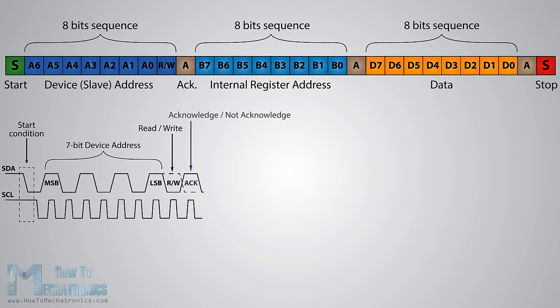The next bit, acknowledge, is used by the slave device to indicate whether it has successfully received the previous sequence of bits. At this time the master device hands control of the SDA line over to the slave device, and if the slave has successfully received the previous sequence it will pull the SDA line down to the condition called acknowledge. If the slave does not pull the SDA line down, the condition is called not acknowledged, meaning it didn't successfully receive the previous sequence, which can be caused by several reasons — for example the slave might be busy, might not understand the received data or command, or cannot receive any more data. In such a case the master device decides how it will proceed.